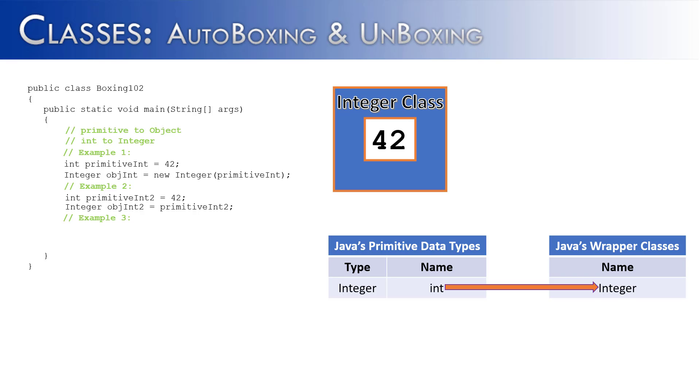I've just said primitive int 2 is now assigned to objint 2. We really have two choices on how this can end. It's either going to end with 42 being wrapped by the integer class or it's going to end in an error.